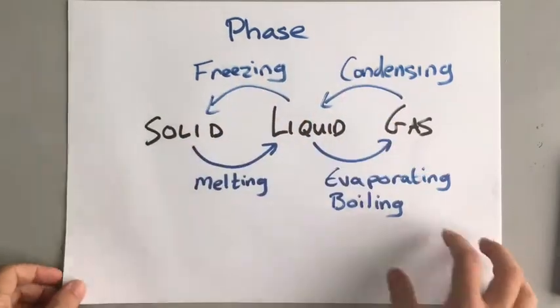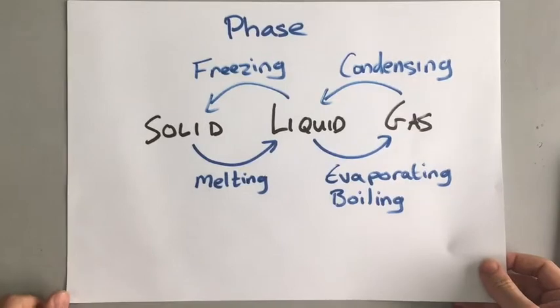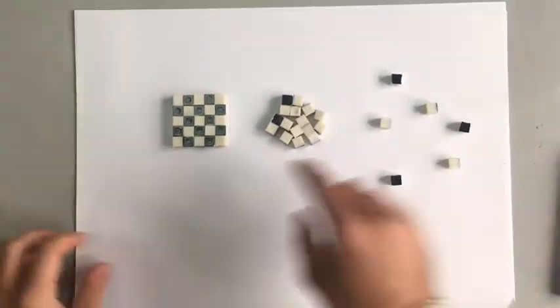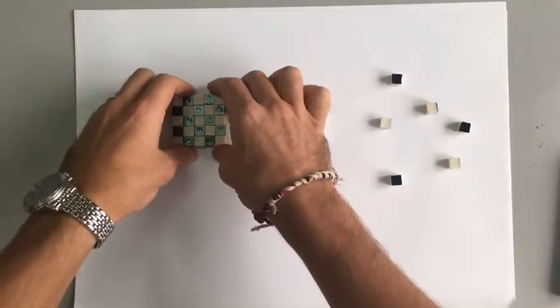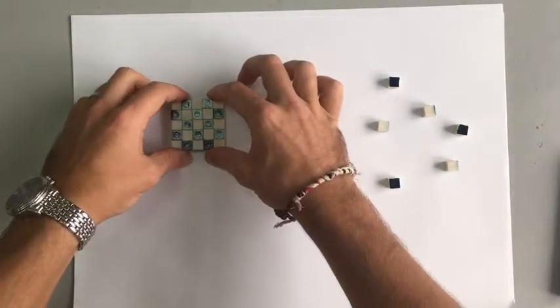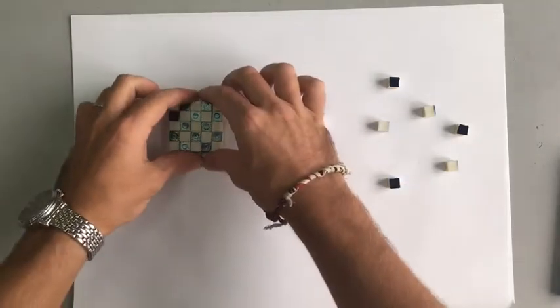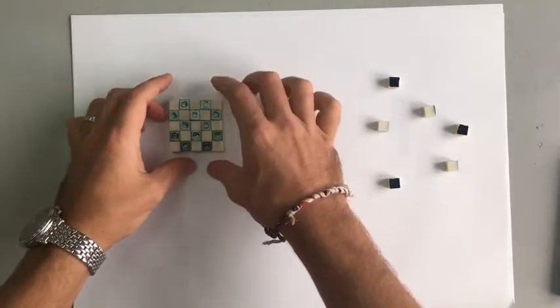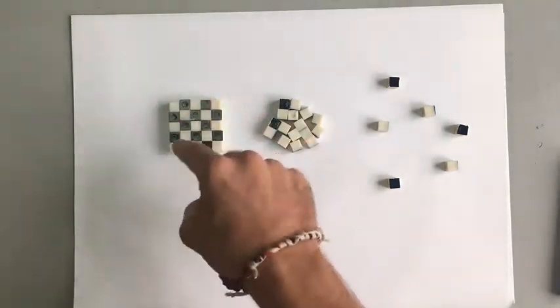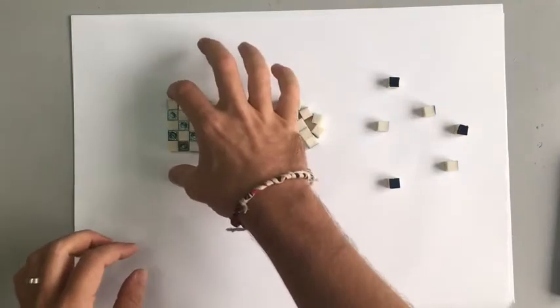To understand more about these three states, we need to look at what particles look like in each state. The particles in a solid are closely packed and ordered and they do not move around. They vibrate a little bit because they've got some heat energy — you don't get a solid that is completely still — but they stay in a pattern and an ordered structure. That's a solid.